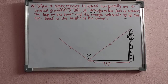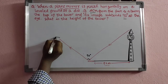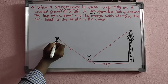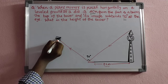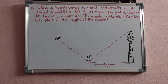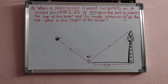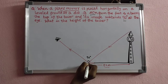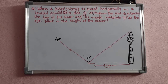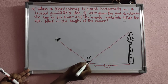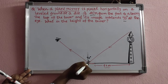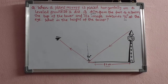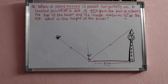So this is the setup — the top of the tower, the image in the mirror, and the eye of the observer. This angle is 90 degrees. Now, from the basics of reflection, this is the point of incidence. From the point of incidence I draw the normal, which makes 90 degrees with the mirror.